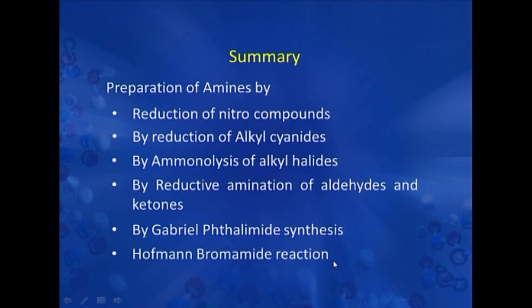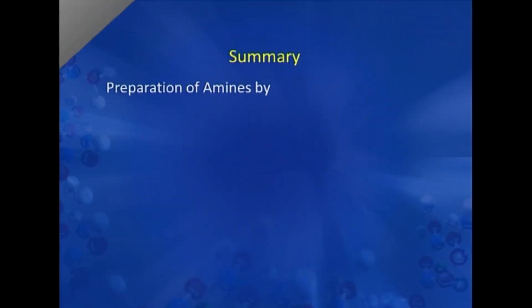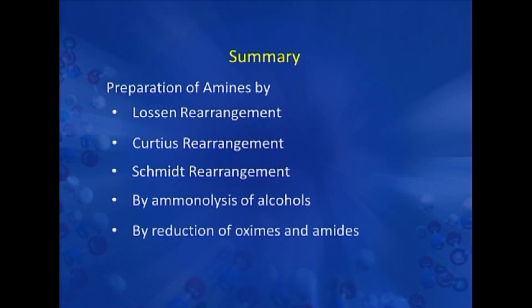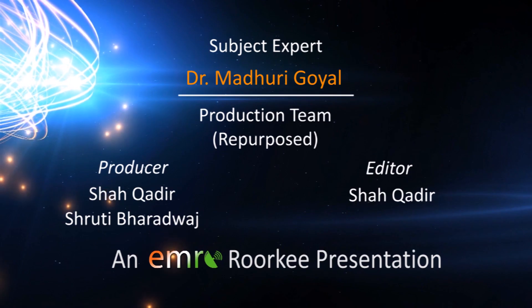In today's lecture, we have discussed various methods of preparation of amines: from reduction of nitro compounds, reduction of alkyl cyanides, ammonolysis of alkyl halides, reductive amination of aldehydes and ketones, Gabriel phthalimide synthesis (which gives primary amines in good yield and pure form), Hoffmann bromamide reaction (where amines with one carbon less than the starting amide are formed), Lossen rearrangement, Curtius rearrangement, Schmidt rearrangement, ammonolysis of alcohols, and reduction of oximes and amides.